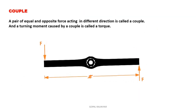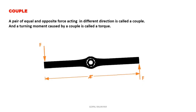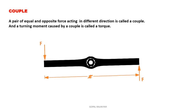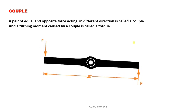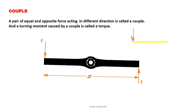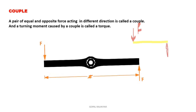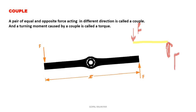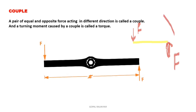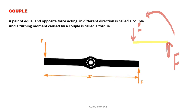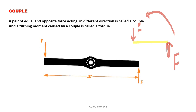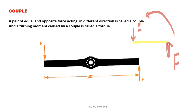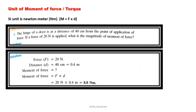What is a couple? A pair of equal and opposite forces acting in opposite directions is called a couple. The turning moment caused by a couple is called torque. For example, if we apply equal forces F on opposite sides of a body, it starts rotating — in this case, anticlockwise. This pair of equal forces is the couple, and it causes a turning effect. The unit of couple is the same as torque or moment — that is, Newton meter.